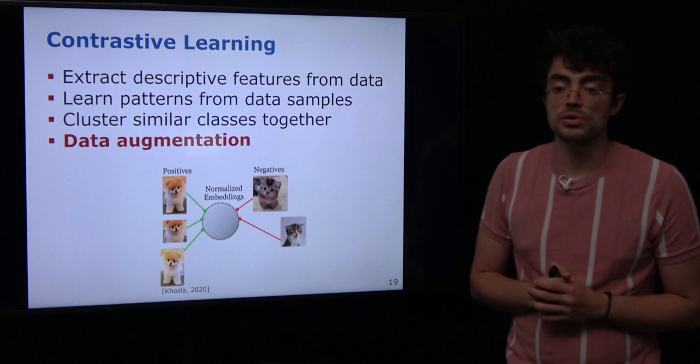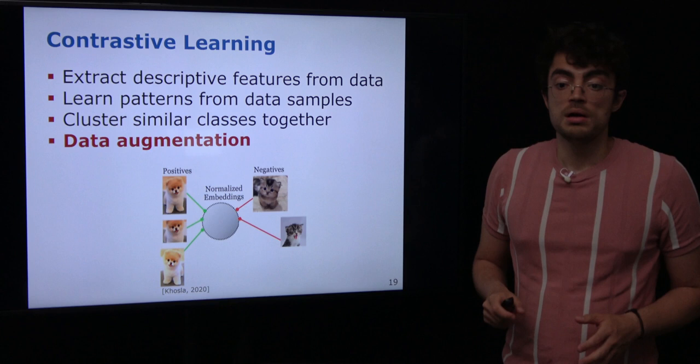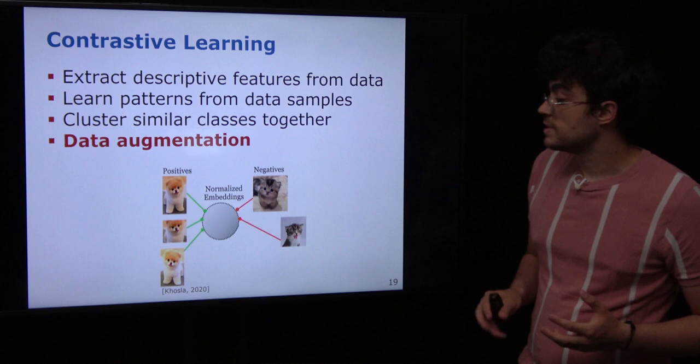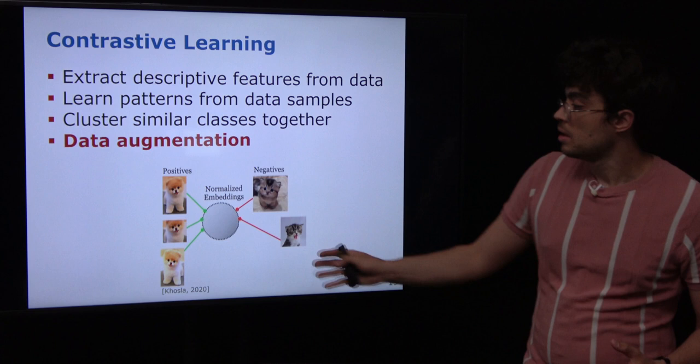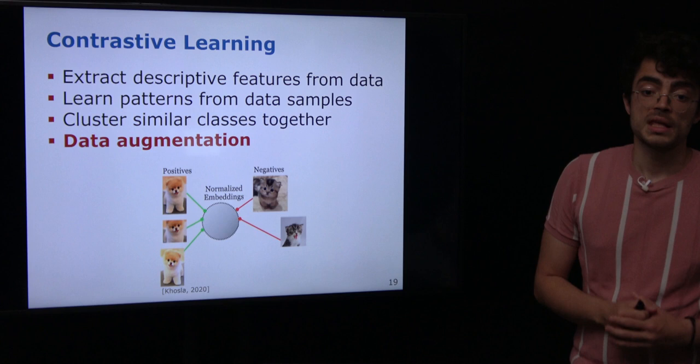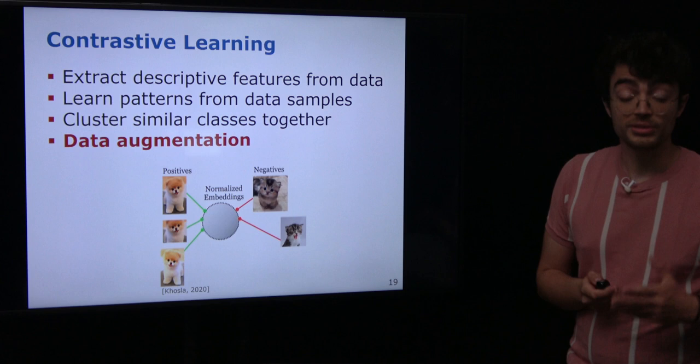A more complex task is so-called contrastive learning. In this case we still want the network to extract descriptive features from the raw data, but the goal is to cluster together samples of the same class and separate them from samples of other classes — for example, samples of one dog are together and separated from samples of a cat. This is achieved through data augmentation.